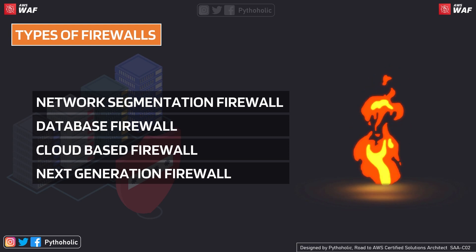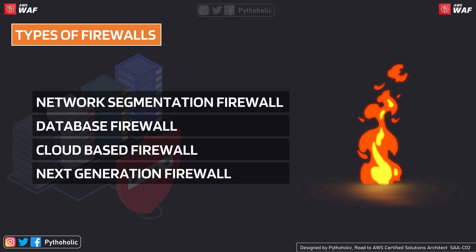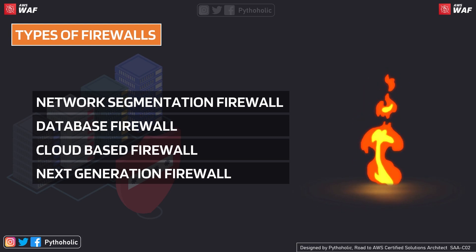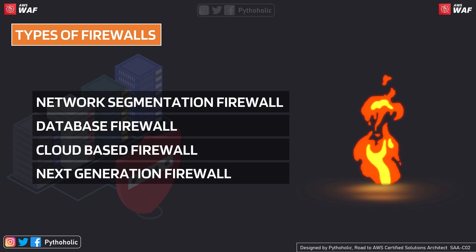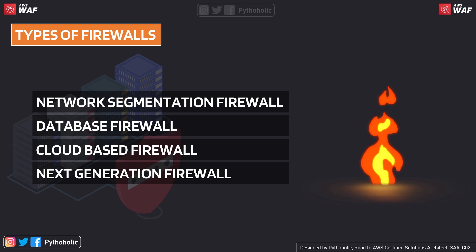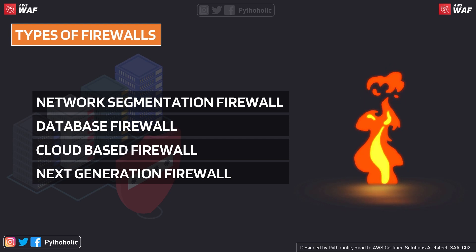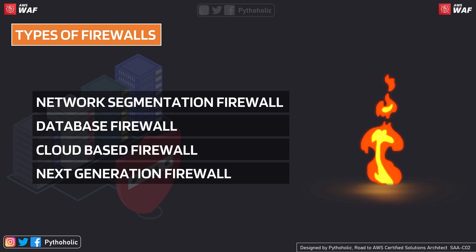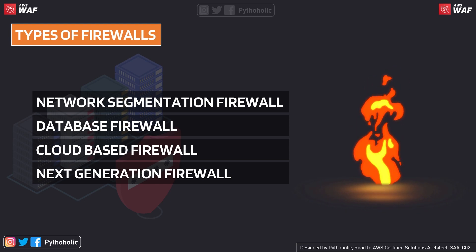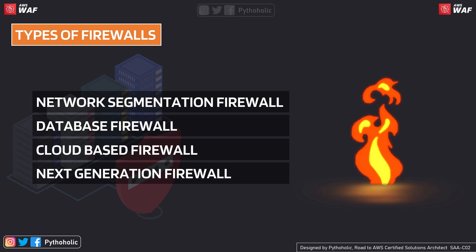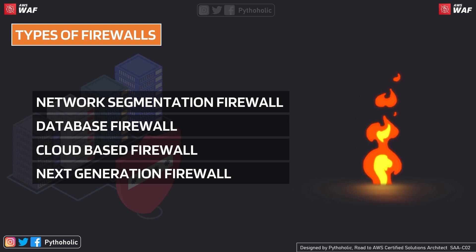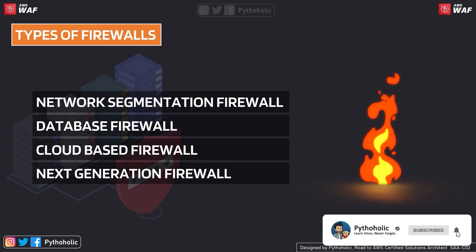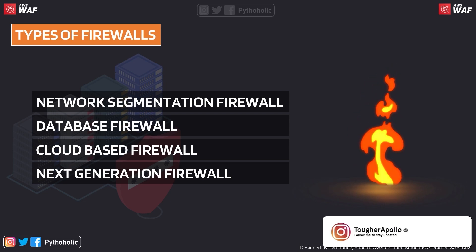The database firewall is a type of web application firewall that helps you monitor databases so you can identify and protect them against database-specific attacks. The cloud-based firewall is a firewall installed or hosted on the cloud itself — essentially firewall as a service — installed on third-party providers. It helps block malicious traffic and prevent unauthorized access to private networks. A popular example is Zscaler.